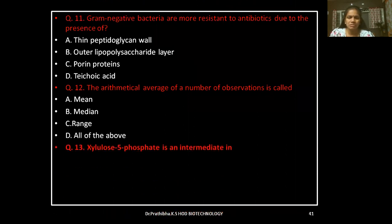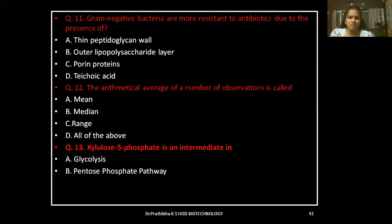Question 13: Xylulose-5-phosphate is an intermediate in — glycolysis, pentose-phosphate pathway, Entner-Doudoroff pathway, or fermentation.